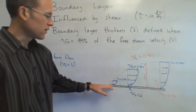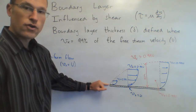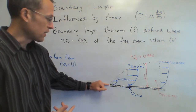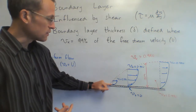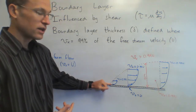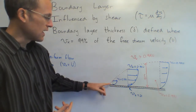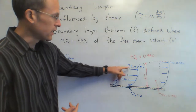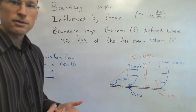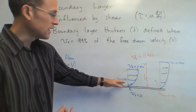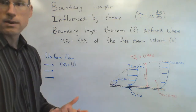I have these velocity profiles — uniform flow comes in, hits the front of the plate, and it's going to stop. I'm going to have zero velocity right at the front, but then as it goes down, that zero velocity influences the layers above it, and so the flow above starts to slow down as well. This red line indicates where 99% of U actually happens, and inside this dashed red line is my boundary layer; outside of that is not the boundary layer.